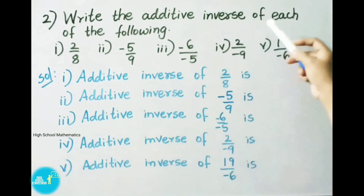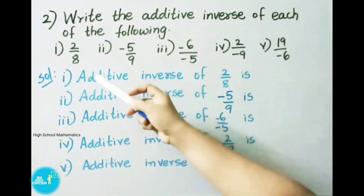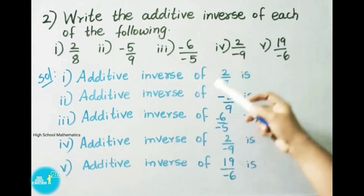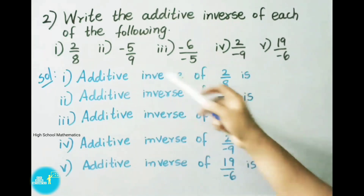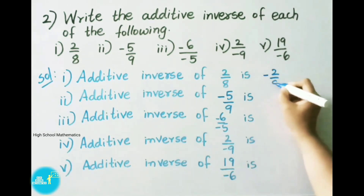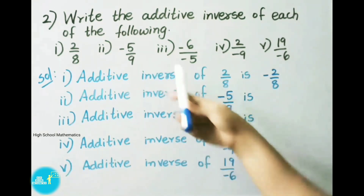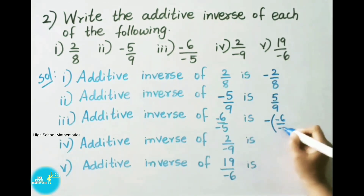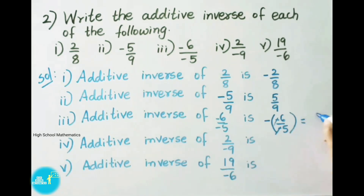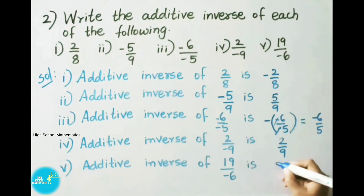See now, question number 2: write the additive inverse of each of the following. First one: 2 by 8. Second one: minus 5 by 9. Third one: minus 6 by minus 5. Fourth one: 2 by minus 9. And fifth one: 19 by minus 6. Let us see the solution. Additive inverse of 2 by 8 is minus 2 by 8. Additive inverse of minus 5 by 9 is 5 by 9. Additive inverse of minus 6 by minus 5 is minus of minus 6 by minus 5; here minus minus cancelled, so the answer is minus 6 by 5. Additive inverse of 2 by minus 9 is 2 by 9. Additive inverse of 19 by minus 6 is 19 by 6.